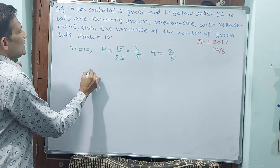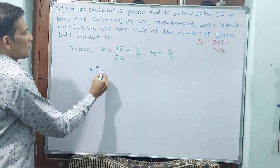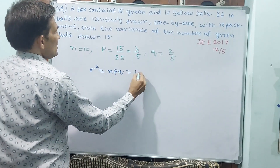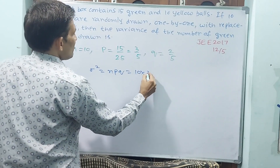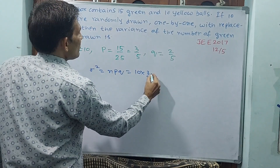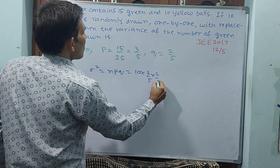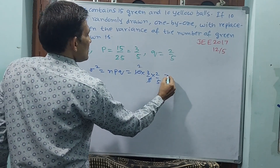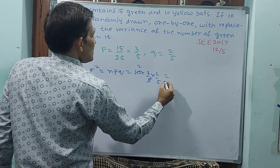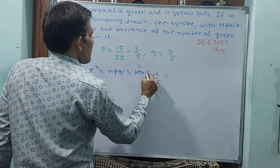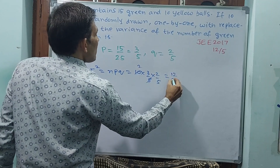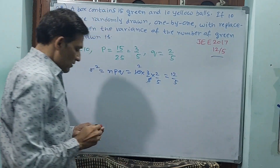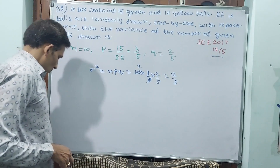Variance: sigma squared is equal to n times p times q. So that is 10 into 3 by 5 into 2 by 5. Simplifying: 10 divided by 5 gives 2, then 2 into 6 is 12. So 12 by 5 will be your answer.